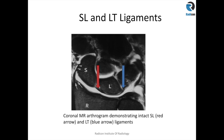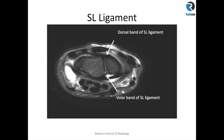The coronal MR arthrogram demonstrates the intact proximal part of the scapholunate ligament and the lunotriquetral ligament. There can be a small central perforation in the proximal part of the scapholunate ligament, which is a normal variant. Therefore, you have to assess the whole of the findings in the axial plane as well before calling it a tear.